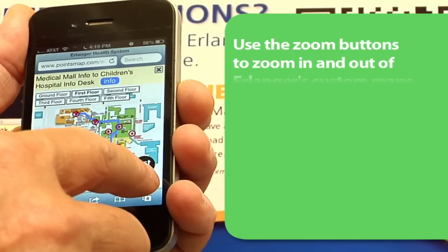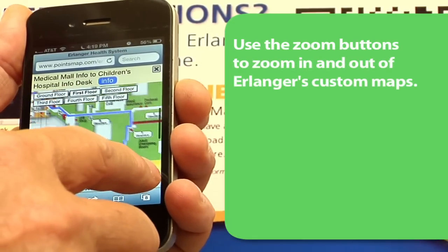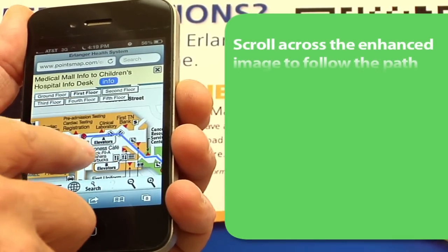Use the zoom buttons to zoom in and out of Erlanger's custom maps. Scroll along the enhanced image with your finger to follow the path more closely.